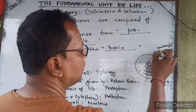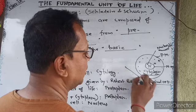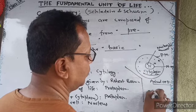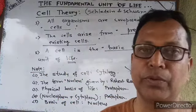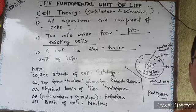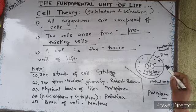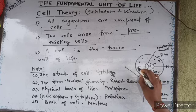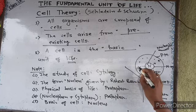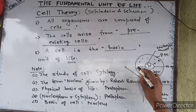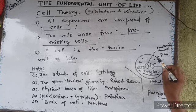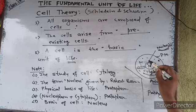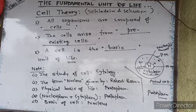The cytoplasm and nucleoplasm together are called protoplasm. For example, mitochondria is a cytoplasmic structure — it is present between the plasma membrane and the nuclear membrane. We can say that mitochondria is 100% a cytoplasmic structure.